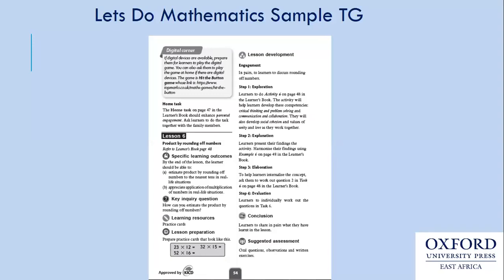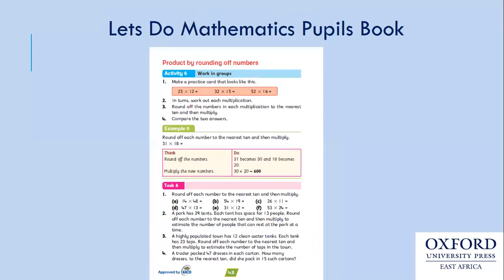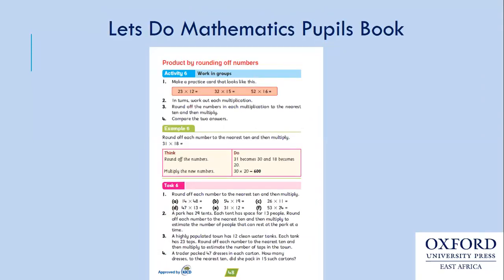Explanation is where the teacher does the example. Elaboration helps learners internalize the concept — ask them to work out question two, intertask six on page 48 in the learner's book. After you have explained, the books help you give them one activity to do as you go around within two minutes before giving the exercise. Step four — evaluation — learners work out the question in task six. You can let them do one sum, then let them work out everything, knowing they have internalized what they were learning. This is a sample page in the learner's book.